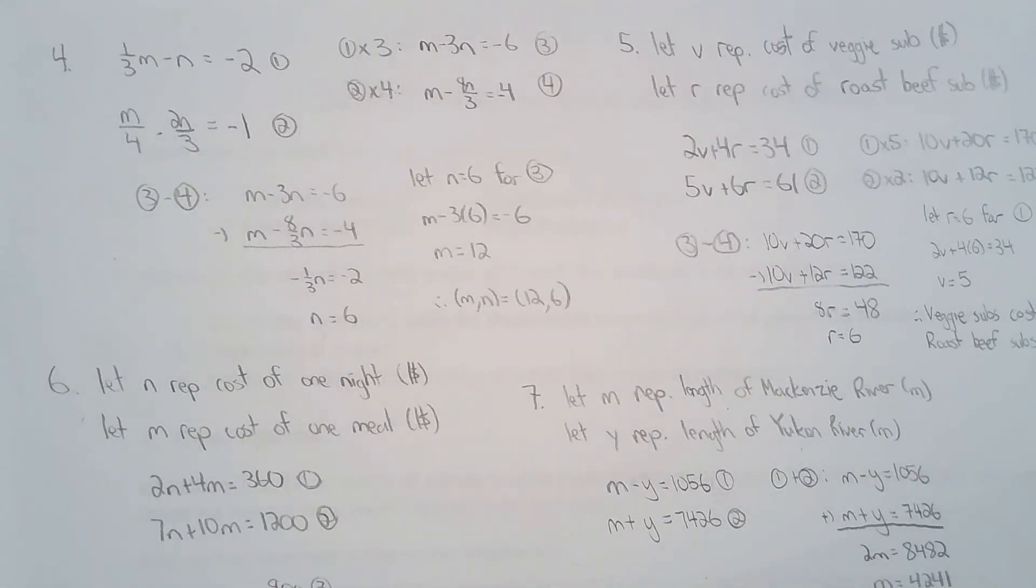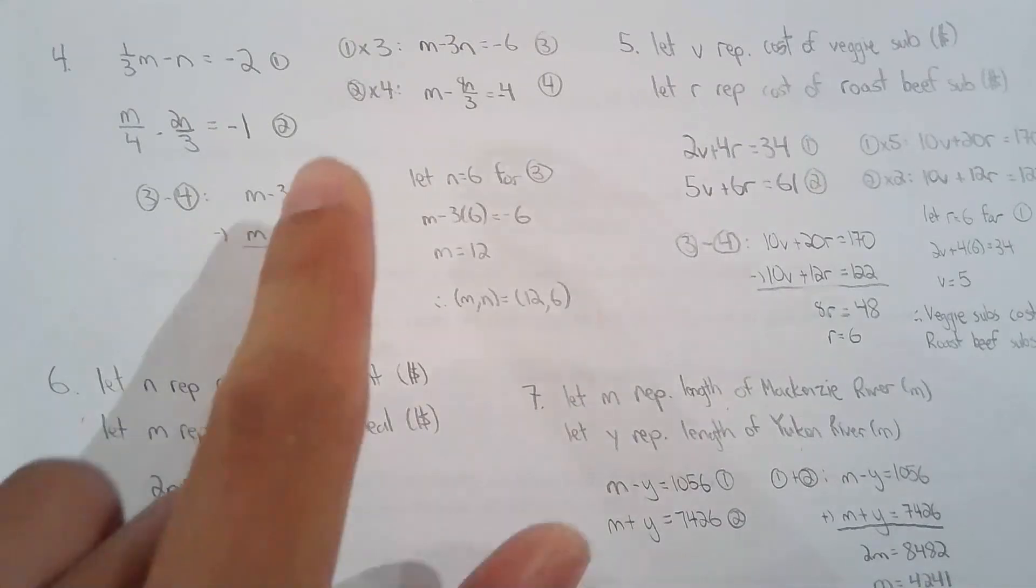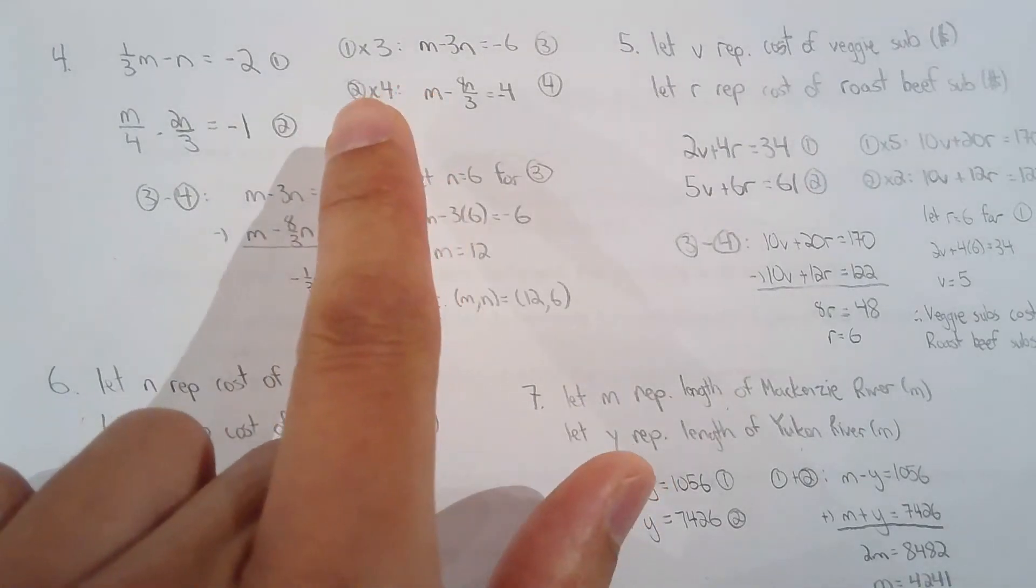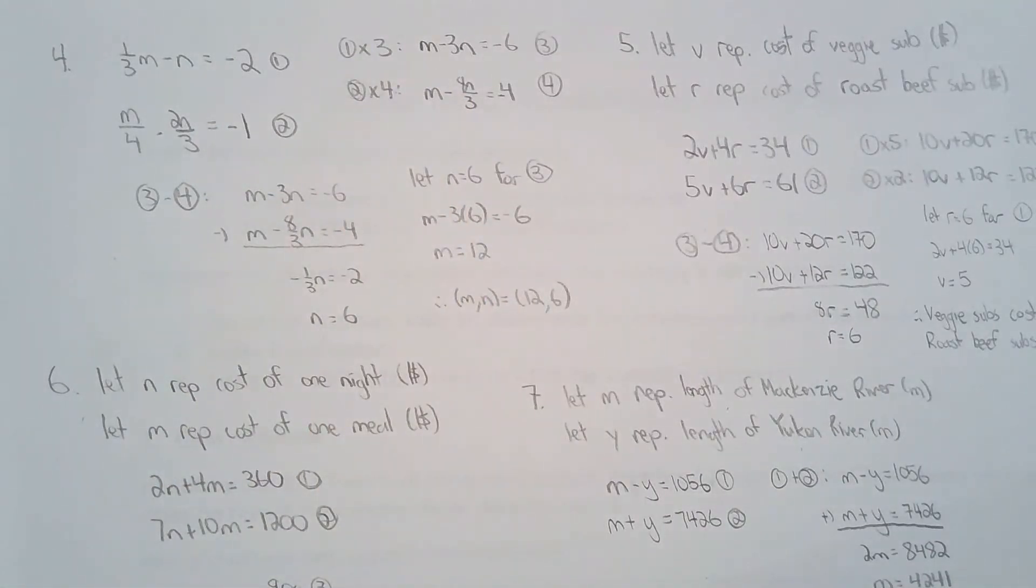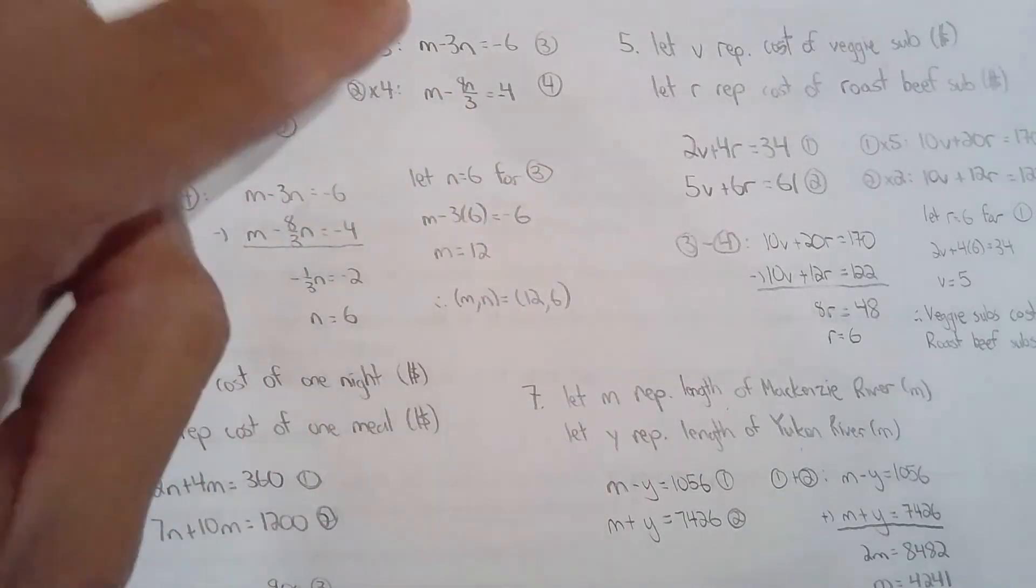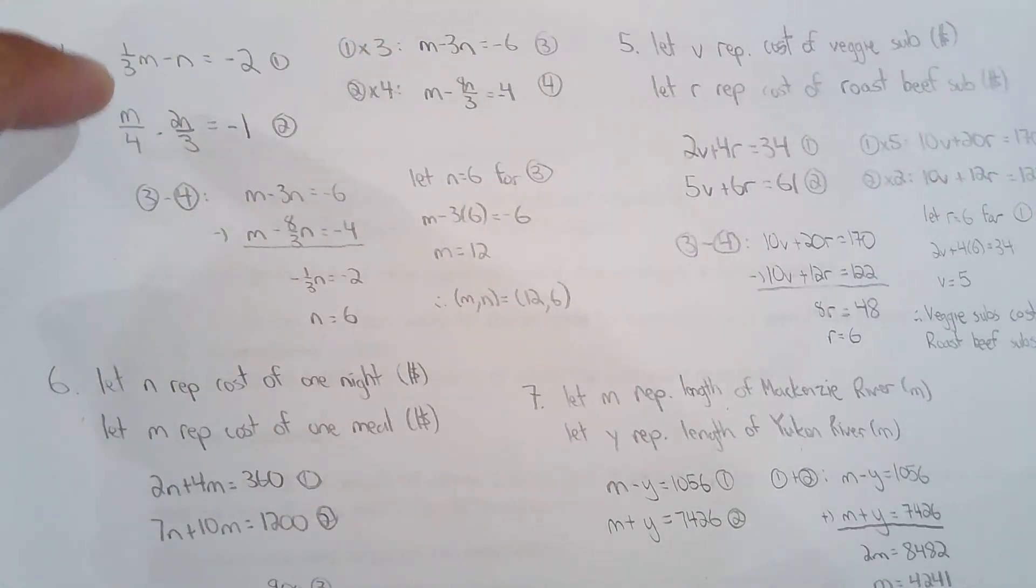So I personally just multiplied equation one by three and equation two by four because that will change one-third m to m and one-quarter m to m as well. And then that will allow me to eliminate m.